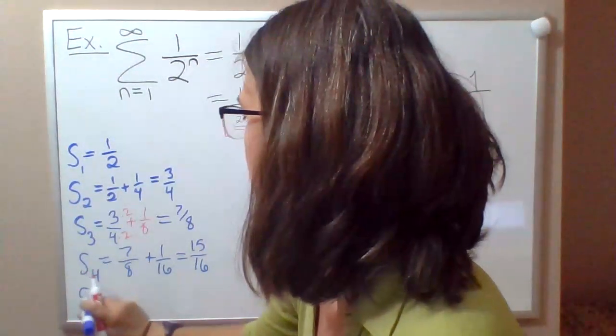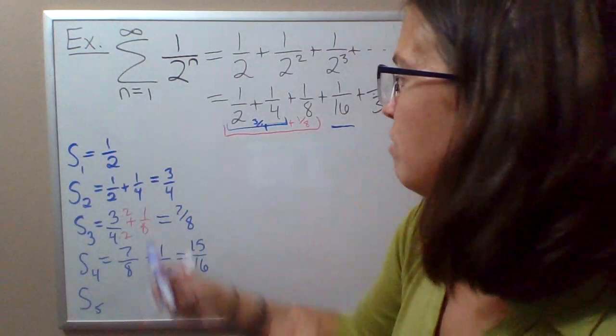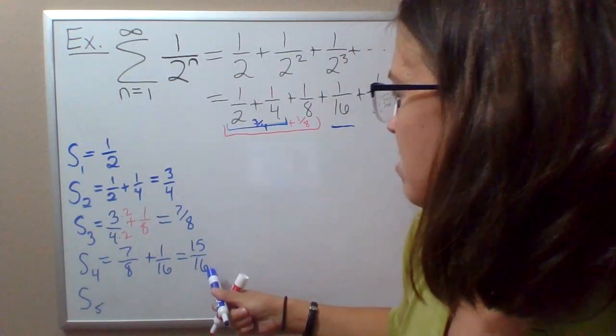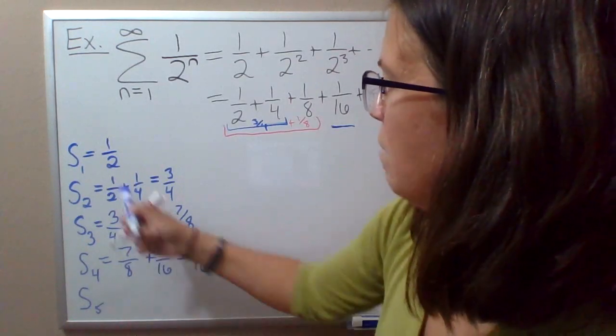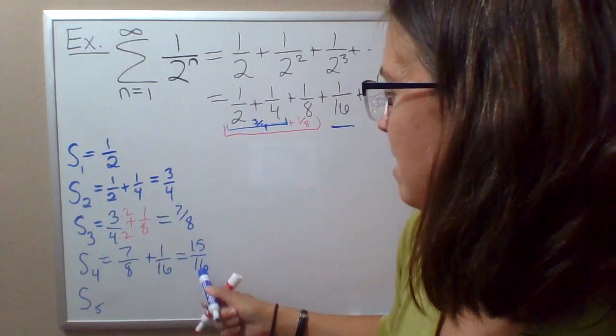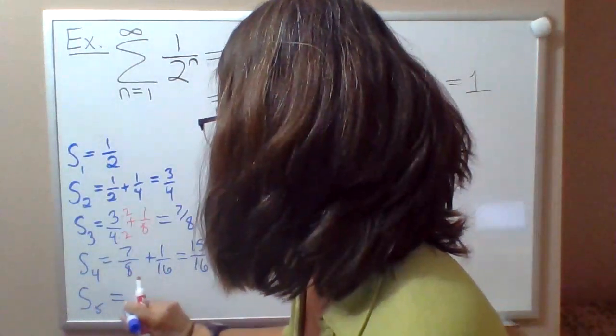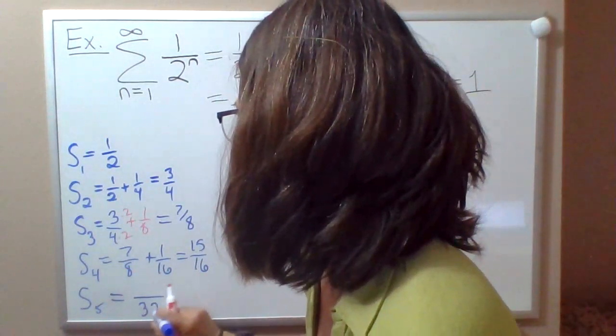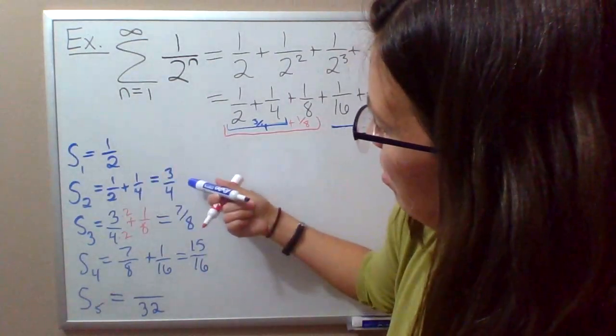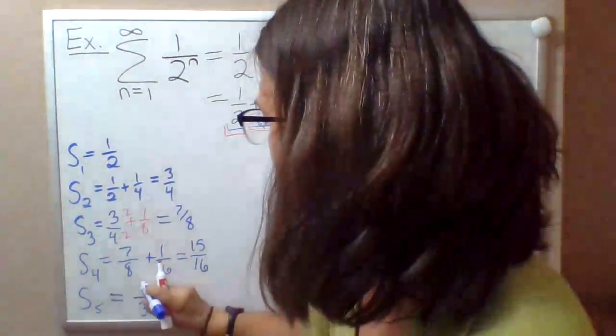Now suppose we try to come up with the sum of the fifth term by identifying a pattern. We went from 1 half to 3 fourths to 7 eighths to 15 sixteenths. Let's focus on the denominator first: it's going 2, 4, 8, 16. The next denominator is probably going to be the next power of 2, 2 to the fifth, which is 32. The pattern in the numerator: notice that the numerator is always one less than the denominator. So I'm going to guess that s5 is 31 over 32.